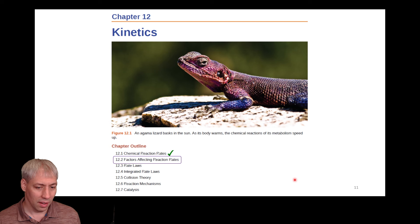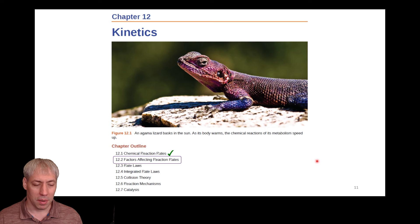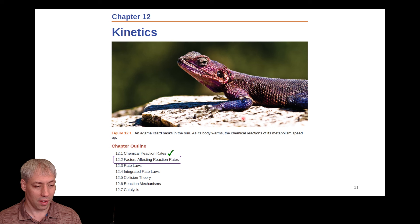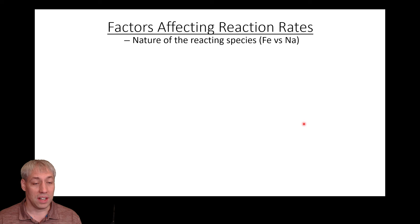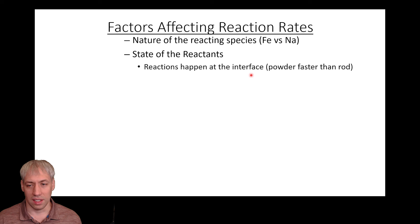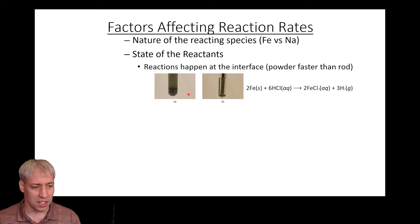Section 12.2 covers the factors affecting reaction rates. Not all rates are equal — some reactions are slow, some are fast. Key factors include: the nature of the reactive species (e.g., sodium in water explodes and generates hydrogen gas, while iron in water creates rust); the state of the reactants (gas vs. liquid vs. solid, and surface area — a powder reacts faster than a metal rod because there's more surface area for contact, generating more reactions per unit time).